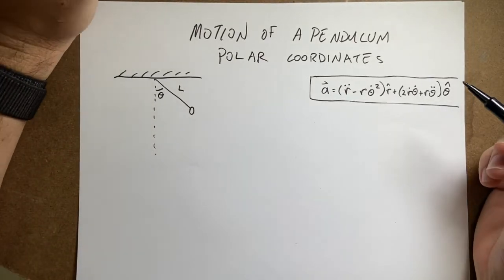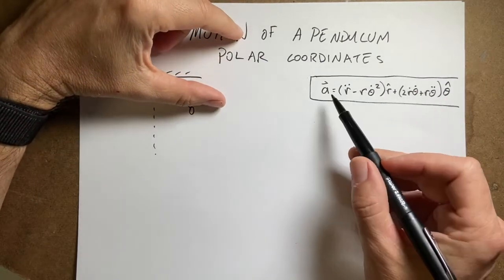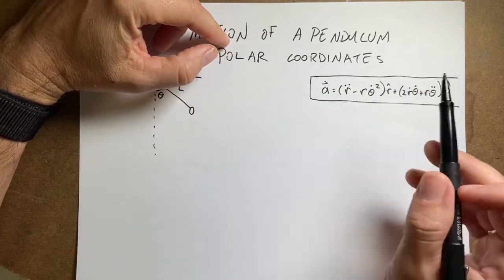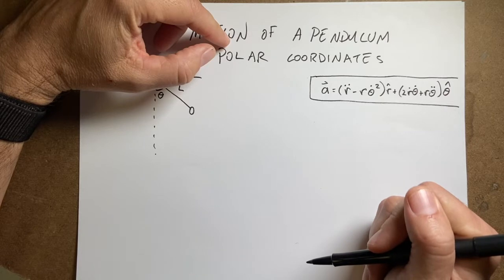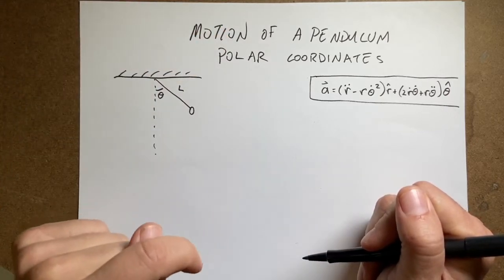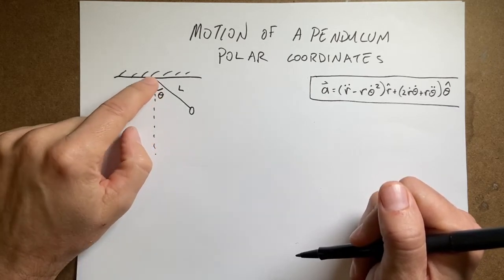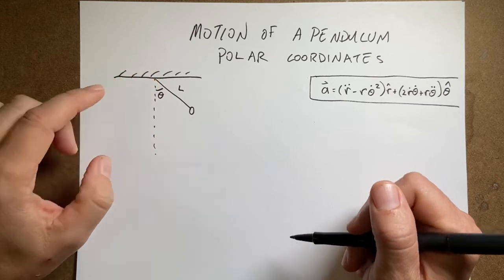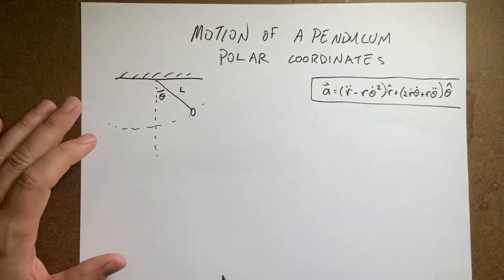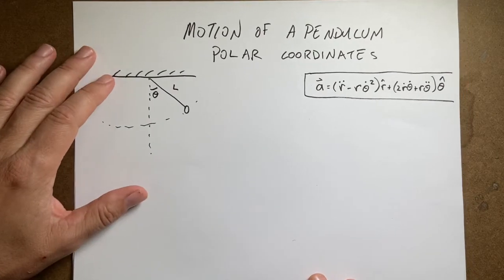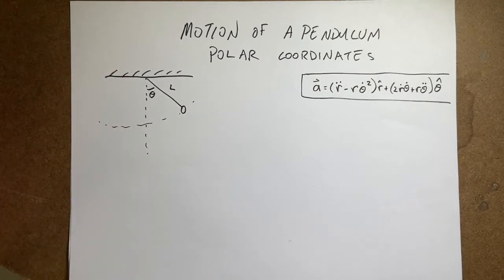In the previous video, I showed the acceleration vector in polar coordinates — I'll link that below so you can watch that derivation. Now let's use that for the motion of a pendulum. I have a mass suspended by a string, attached to a point up top, swinging back and forth. The mass on a string seems like a common problem from introductory physics textbooks, but it's actually super, super complicated. With that said, let's get started.